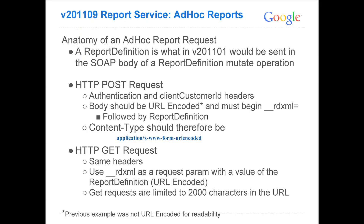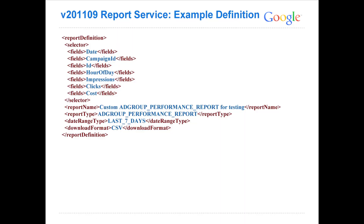When making an ad hoc report request, you actually send the report definition as the HTTP request body when downloading the report. You can make an HTTP POST request or an HTTP GET request. When you make these requests, you need to specify authentication and client customer ID headers. You're going to only be able to use client customer ID in v21909 and forward. The body of the request will need to be URL encoded — just in case you have any non-URL-safe characters — so that when we interpret the request, we know exactly what you mean.